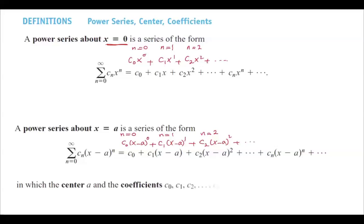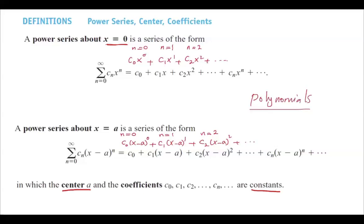Here, a is called the center, and the coefficients c_0, c_1, c_2, and so on are all constants. So as you can see, you're taking a bunch of polynomials and adding them together.